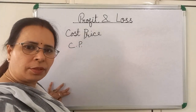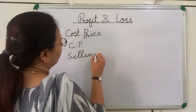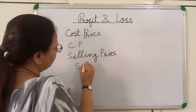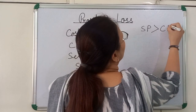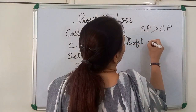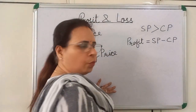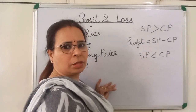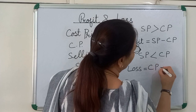The amount he received after selling the toy is called selling price. The short form of selling price is SP. When SP is greater than CP, he made a profit. The formula of profit is equal to SP minus CP. When SP is less than CP, he made a loss. The formula of loss is CP minus SP.